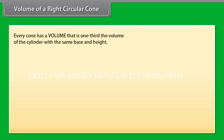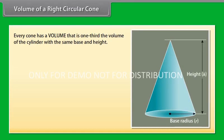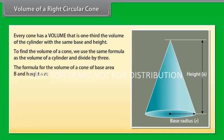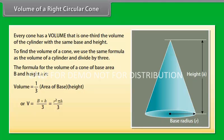Every cone has a volume that is one third the volume of the cylinder with the same base and height. To find the volume of a cone, we use the same formula as the cylinder and divide by 3. The formula for the volume of a cone of base area B and height H is V = (1/3) × B × H, or equivalently V = (1/3)πr²h.